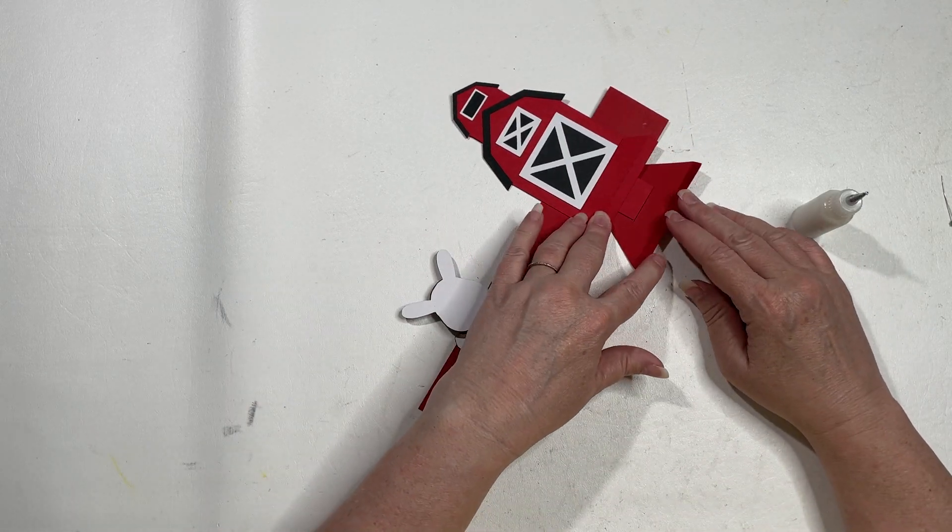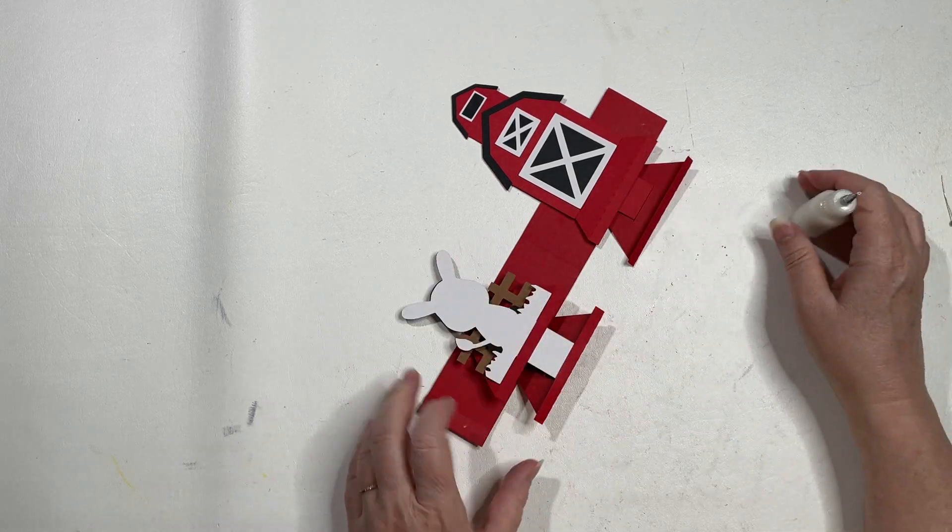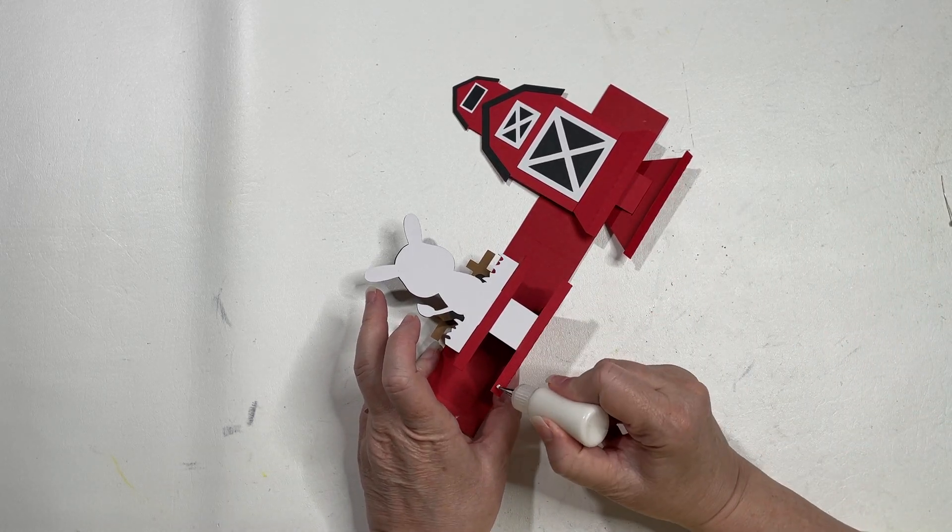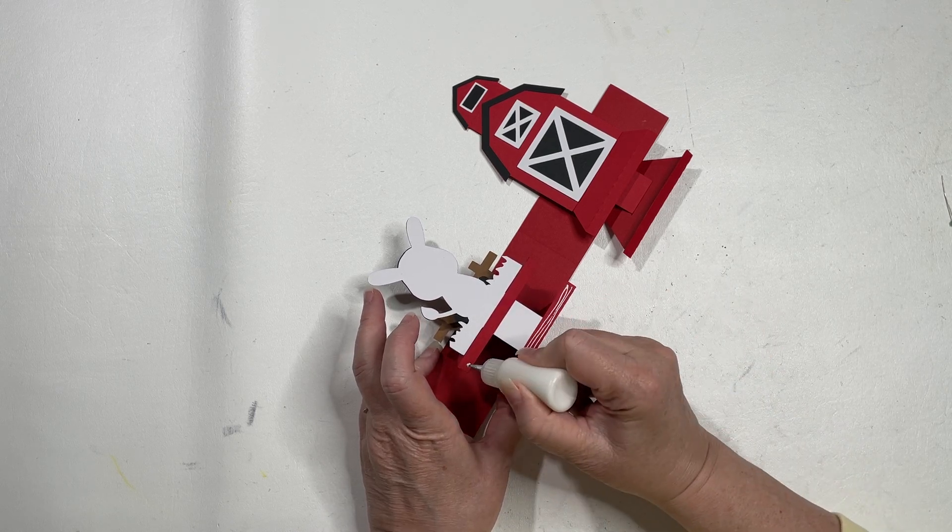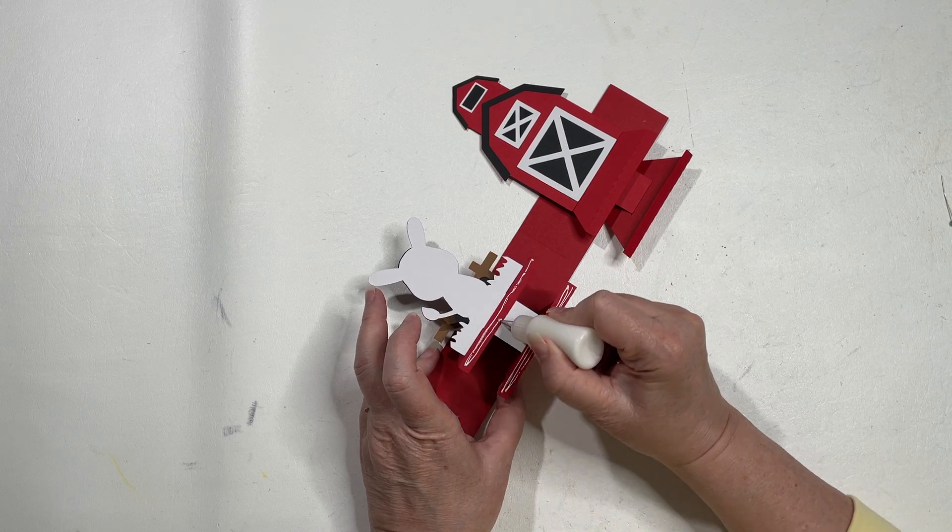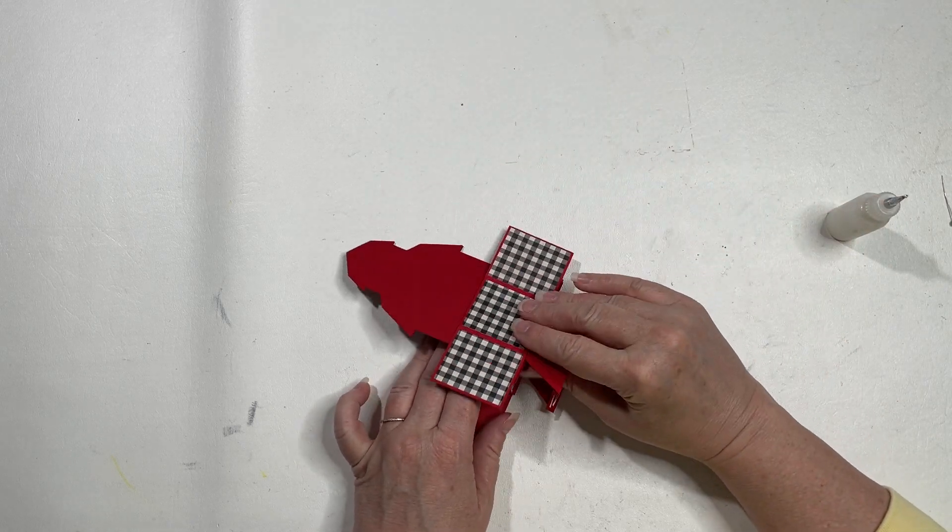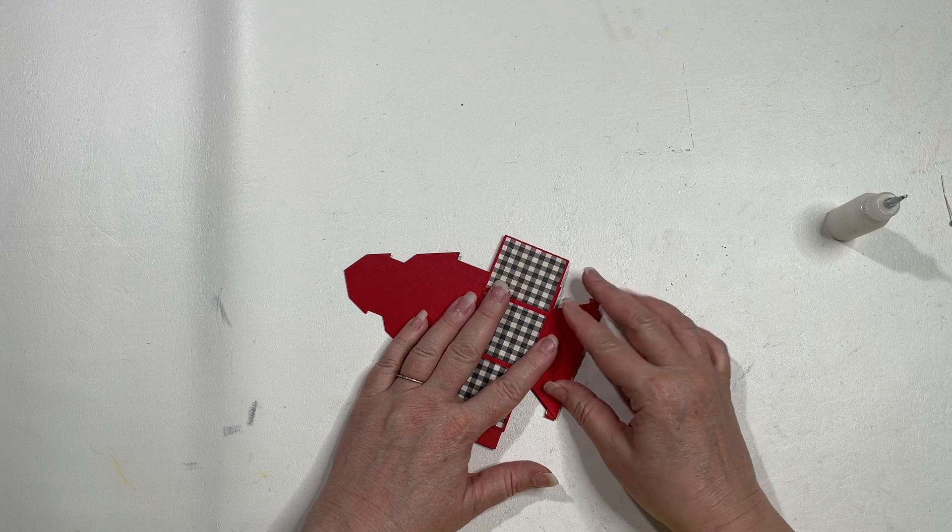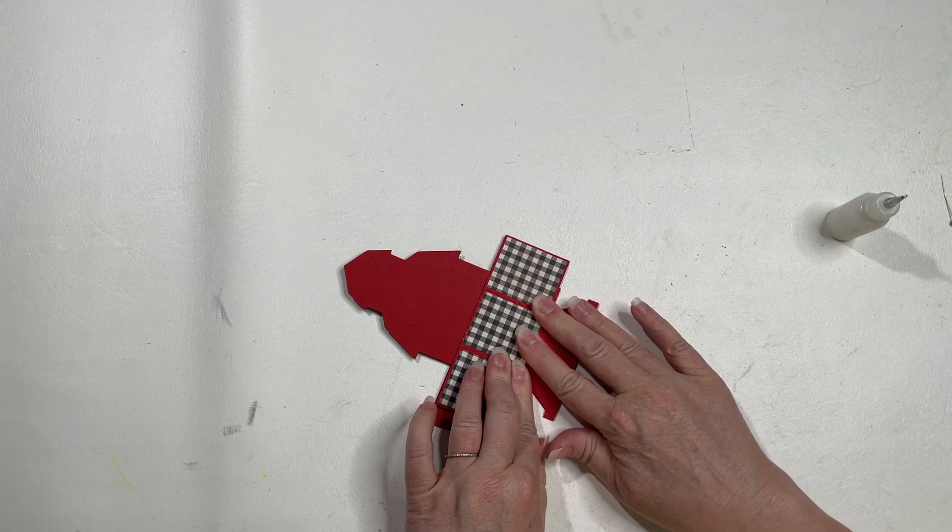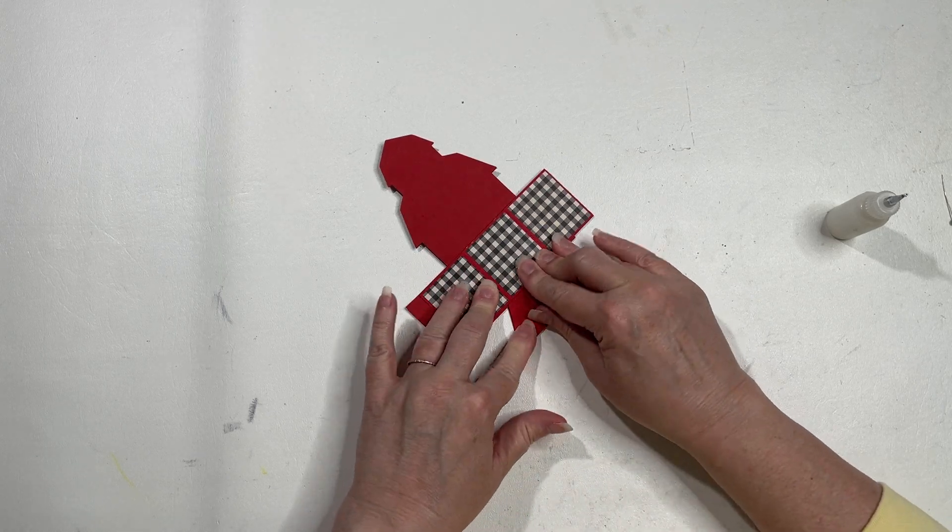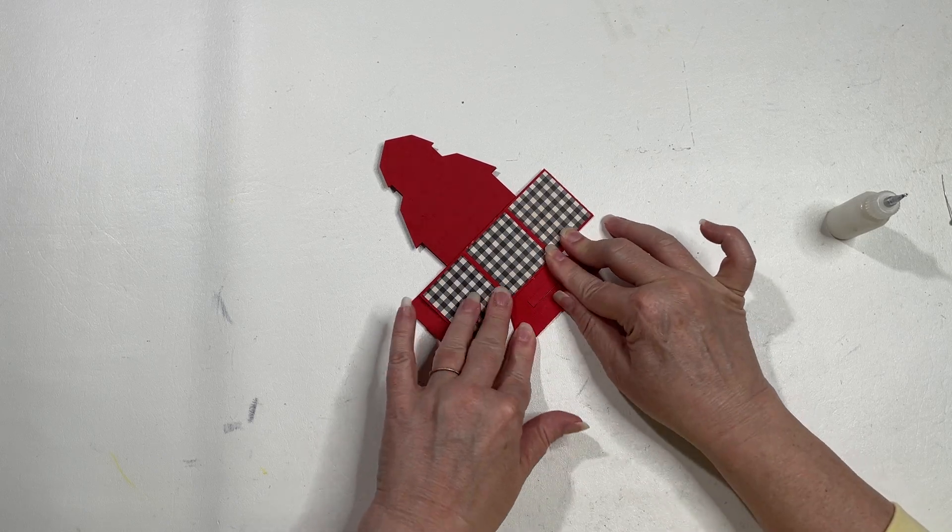So the next thing we're going to do is we're going to fold this bottom tab up. We're going to leave the top tab down straight and we're going to glue these two tabs on each side together, just the tabs. We're just going to fold this over and glue them together. You have a little bit of bulk here at the center one, so you have to kind of push those in there. Make sure you're getting them adhered well.